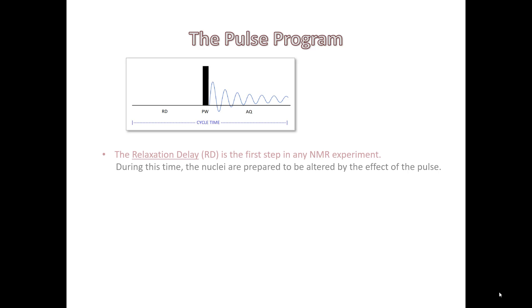First we're going to learn a little bit about pulse programs. This graphic is a typical 1D pulse program. The relaxation delay is the first step in any NMR experiment. During this time, the nuclei are prepared to be altered by the effect of the pulse.